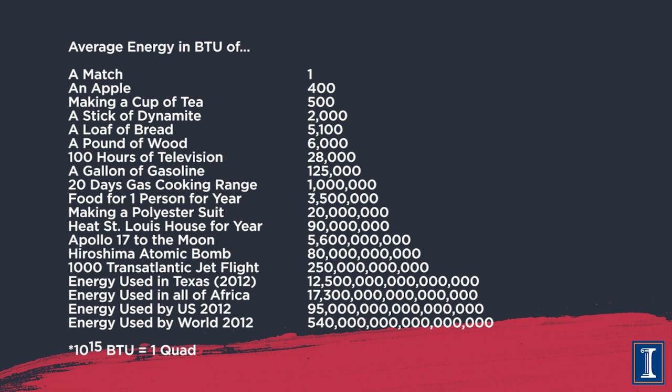I've got a graphic here showing some comparisons in BTUs: making clothes, going to the moon, the energy used in Texas, the energy used in all of Africa. Most importantly, the bottom two are the energy used by the United States in 2012 and the total energy used in the world in 2012 — 95 quads versus 540 quads. In joules, one quad is approximately one exajoule (EJ, 10 to the 18th joules), within about 5 percent.